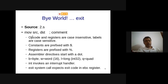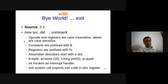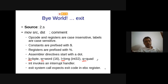The 'L' in movl can be replaced by other suffixes: movb for byte, movw for word, movl for 32-bit (long), movq for 64-bit (quad), and movt for 10-byte floating point. In practice, we will mainly use movl and movq for 32-bit and 64-bit values. The 'int' instruction invokes the interrupt handler; the exit system call expects the exit code in EBX.